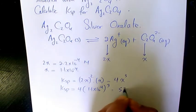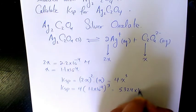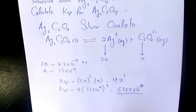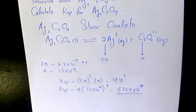The answer is going to be 5.324 times 10 to the power of negative 12. That's the value of Ksp of silver oxalate salt.